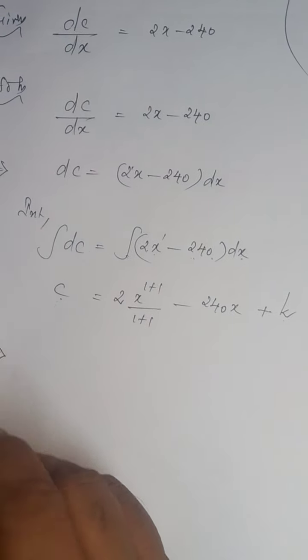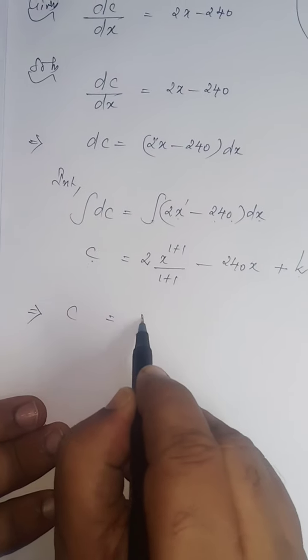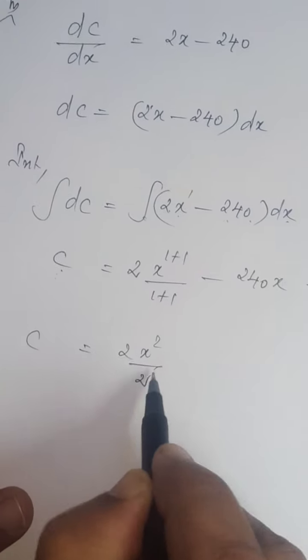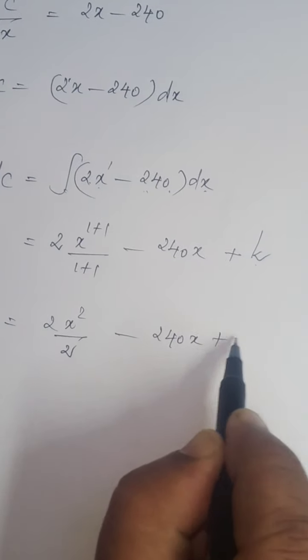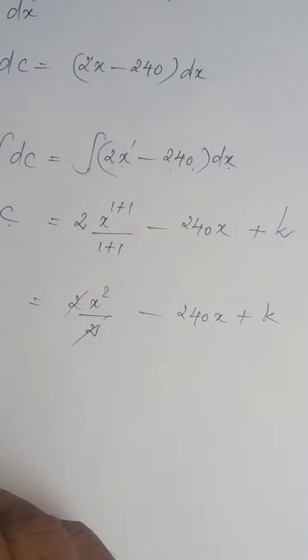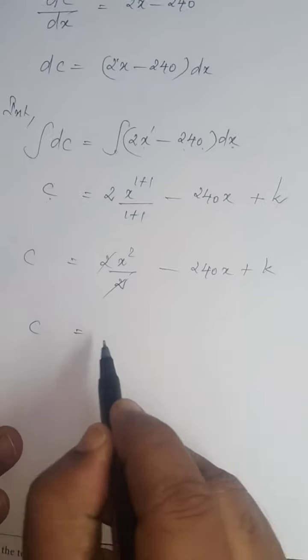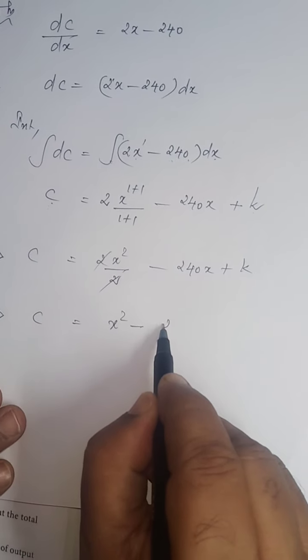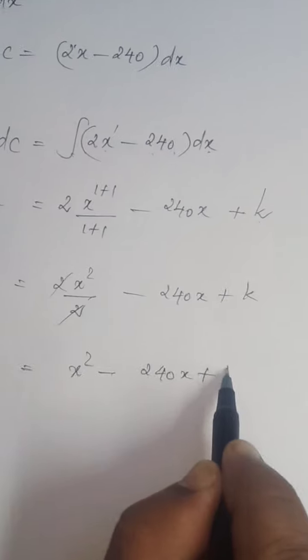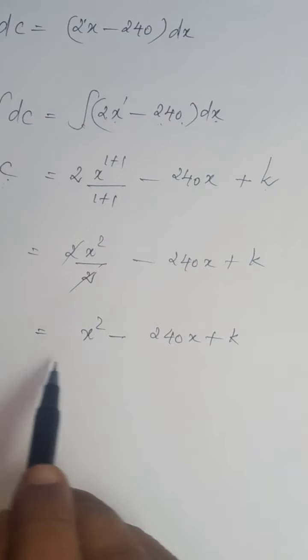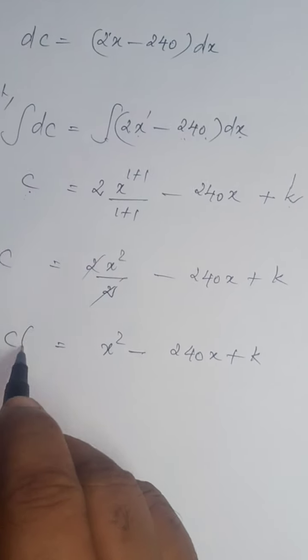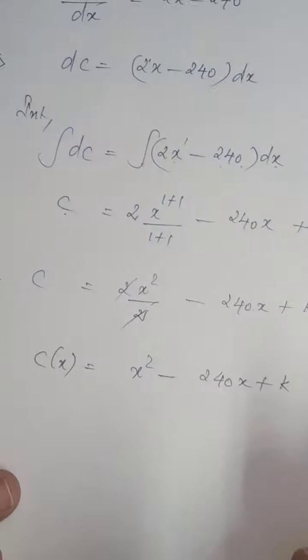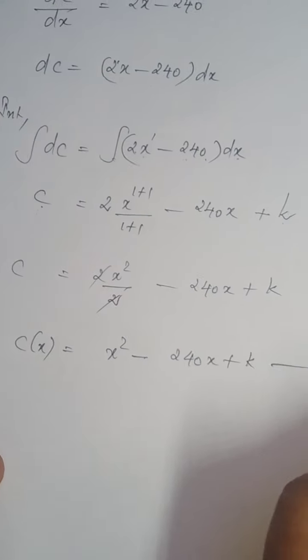Which implies C equals 2X squared divided by 2 minus 240X plus K. 2 gets cancelled. Here in terms of X, cost in terms of X. Now, you can write C of X. C and C of X are same only. Let it be number 1.